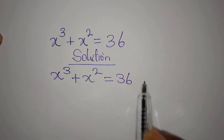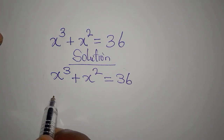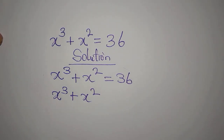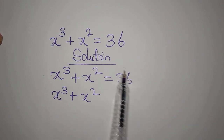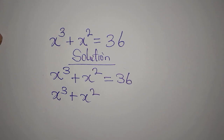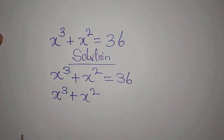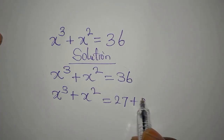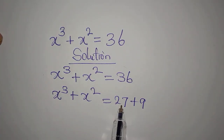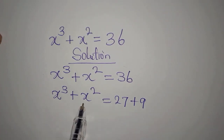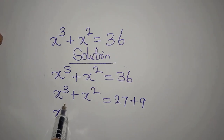If you look at the right hand side, we can break that 36 in the form x³ plus x². How would you break 36? Would it be 30 plus 6, or 18 plus 18? The 36 here should be 27 plus 9, because 27 is 3 to the power of 3, and 9 is 3 squared.